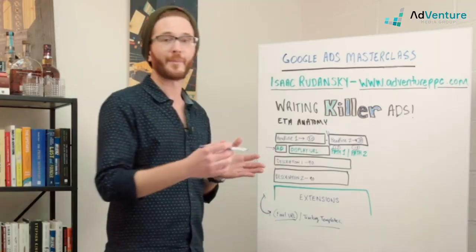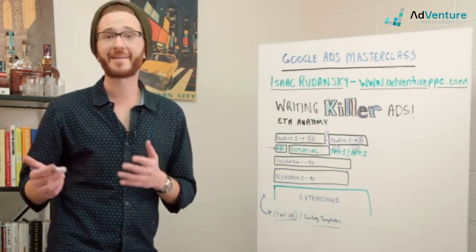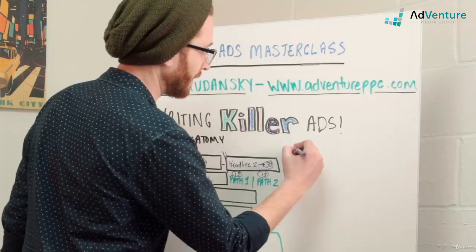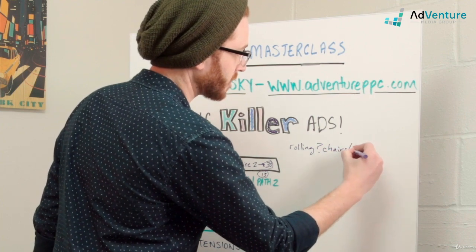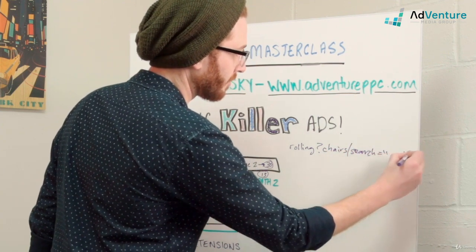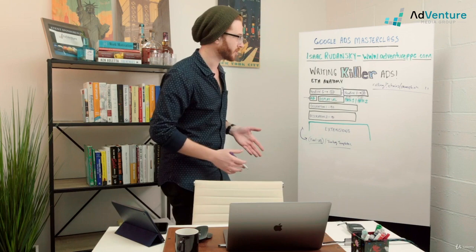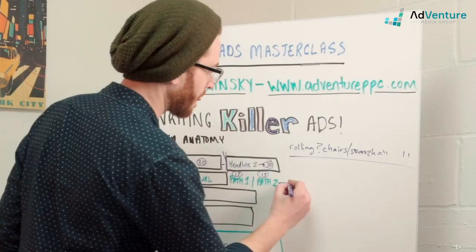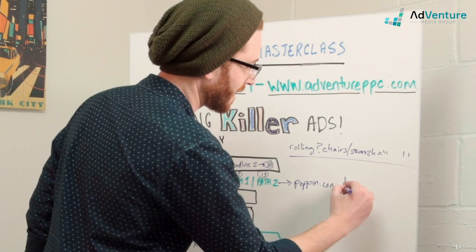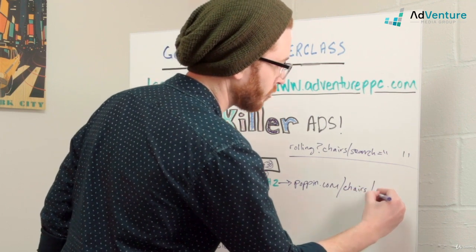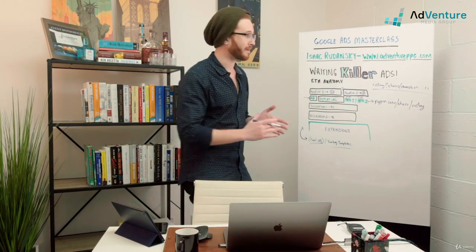For example, let's say we're talking about rolling office chairs. If I were to find that page on Poppin's website, it might be like 'rolling?chairs/search=whatever'—this really weird search results URL to get to a page that just has rolling office chairs. What I could do for my display URL is say poppin.com for my root URL, and then have 'chairs' as my first path and 'rolling' as the second.